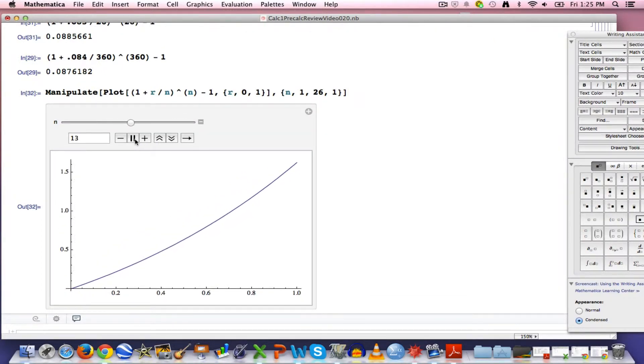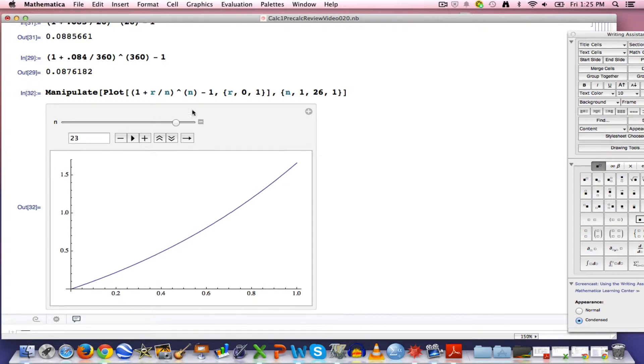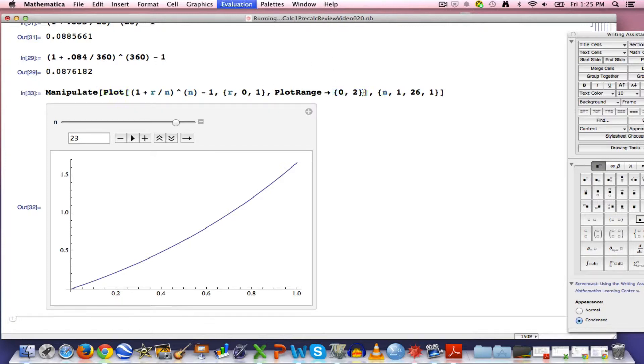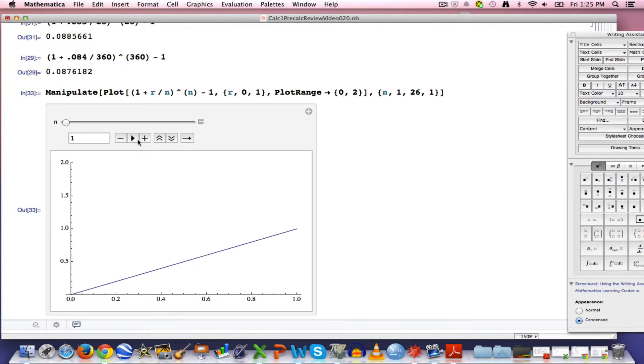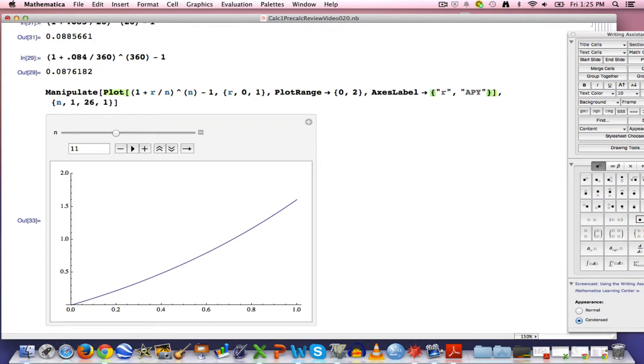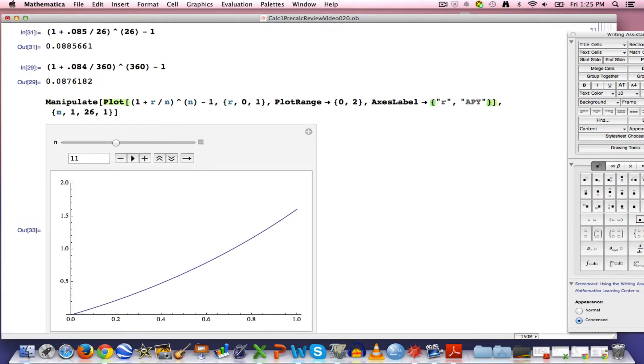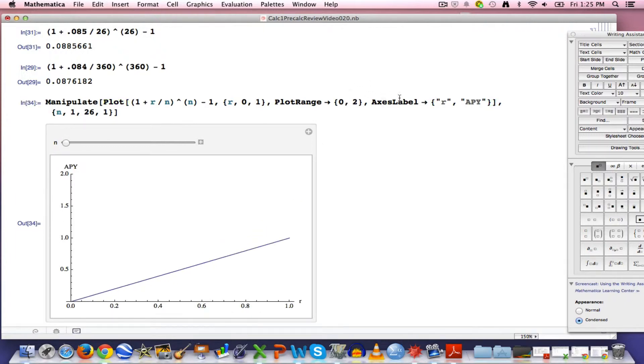It would be good to fix the plot range. Let's make it 0 to 2. Now that will stay constant, and we can see the graph changing. It would be good to label the axes. The horizontal axis is the independent variable, that's R. The vertical axis is the dependent variable, that's the APY. So we're seeing how the APY depends on R.